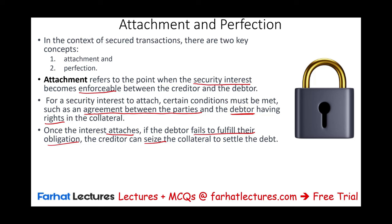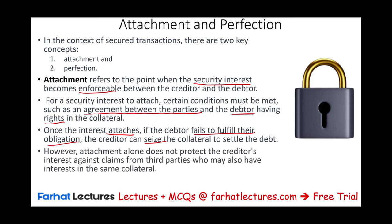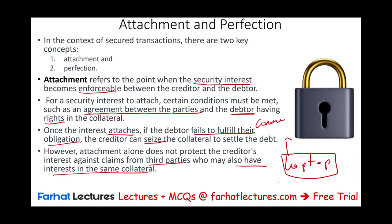However, sometimes the person pledging an asset may also be pledging it to other parties at the same time, or they might sell the asset or go into bankruptcy. Attachment alone does not protect the creditor's interest against claims from third parties who may also have an interest in the same collateral. For example, Sarah put her laptop up for the camera, but also used the same laptop as collateral at an Apple store. So whose laptop is it? Attachment alone is not enough — we need perfection.